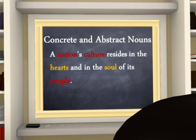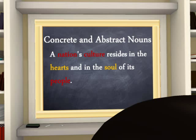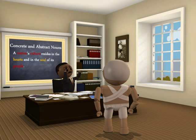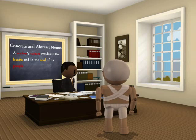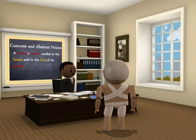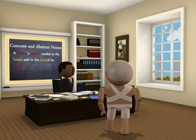"A nation's culture resides in the hearts and in the soul of its people." In this sentence we have many nouns: nation, culture, hearts, soul, and people. The concrete nouns — nation, culture, and people — are colored red. The other nouns in the sentence fall into the other class known as abstract nouns.